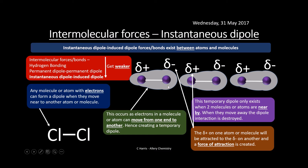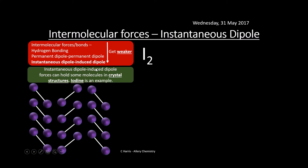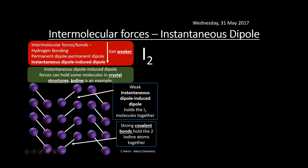This is the weakest type of intermolecular force. Iodine is a classic example — there are instantaneous dipole-induced dipole forces between iodine molecules, forming a very defined crystal structure. You can see the iodine molecules arranged in a very regular crystal-like structure, held together by these weak forces. The white lines in the diagram represent the strong covalent bonds — make sure you know the difference between covalent bonds within atoms and weak forces between molecules.